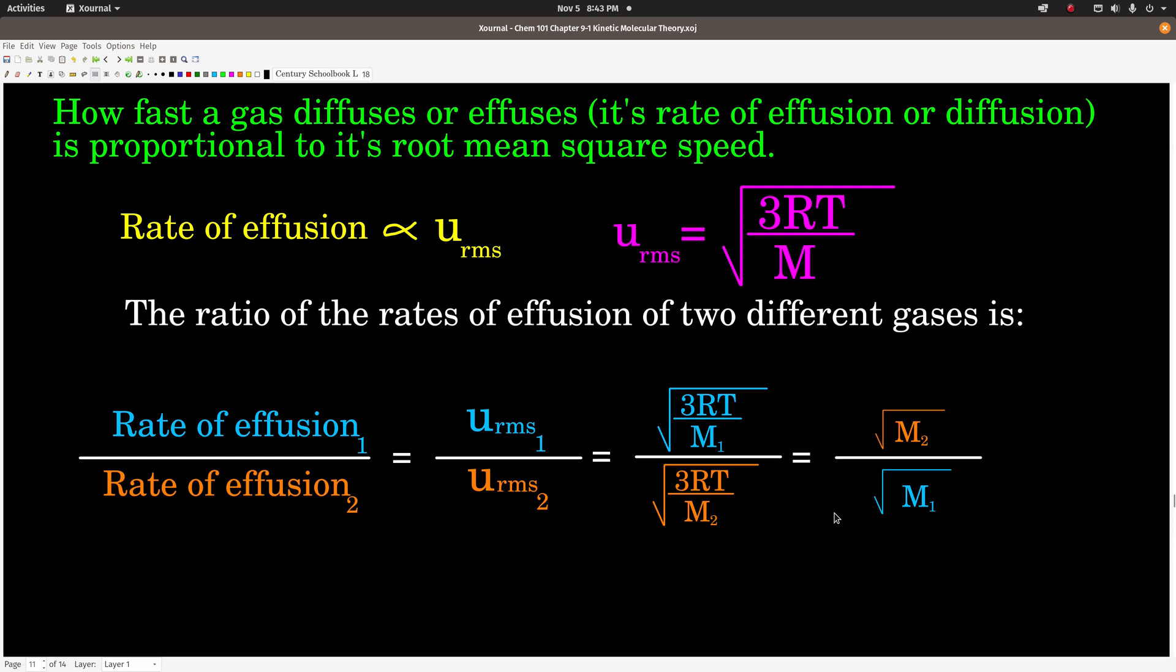So speaking of rates of effusion, how fast the gas diffuses or effuses, called its rate of effusion or diffusion, is proportional to its root mean square speed. The faster, on average, the faster the root mean square speed is, the more often it's going to have a chance to hit that opening and go through that hole with the effusion, and for diffusion it's just moving around faster. We're going to talk about it in terms of effusion here. So we can say the rate of effusion is proportional to, so it's equal to the root mean square speed times some constant. But we know the root mean square speed is the square root of 3RT over M.